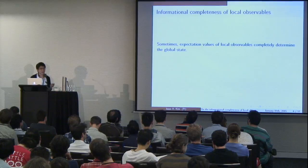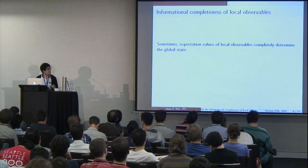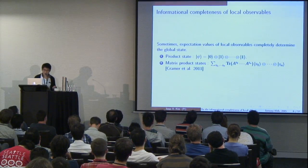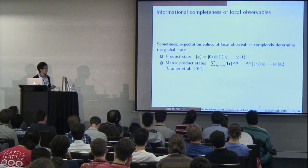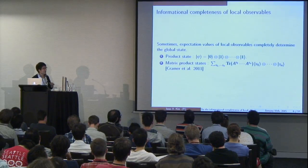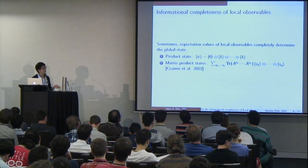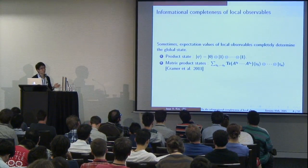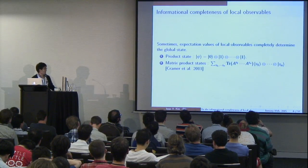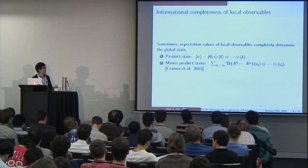Sometimes the expectation values of local observables can actually completely determine the global state — note I didn't say always, but sometimes. A really trivial example is a product state in a contrived setting. Imagine you have infinite precision and n qubits. You go into your lab, measure qubit 1, convince yourself it's in state 0, measure qubit 2, convince yourself it's in state 1, and so on — convincing yourself it's a product state. But obviously this is a very contrived example.